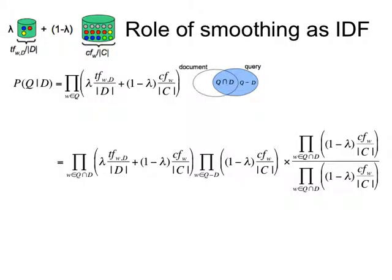Now, I'm going to multiply and divide by the same quantity. You've seen this trick before and it works beautifully in this case again. So I'm going to multiply and divide by the product over the intersection of the query and the document of these terms that I have here. Because it's the same quantity and all of the numbers are non-zero, I can do that. I can always do that.